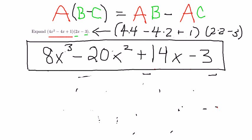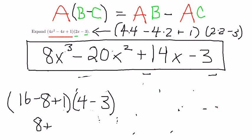4 times 4 is 16. Minus 4 times 2 is 8. Plus 1. All of that times 4 minus 3. 16 minus 8, 8 plus 1 times 1 should be 9.